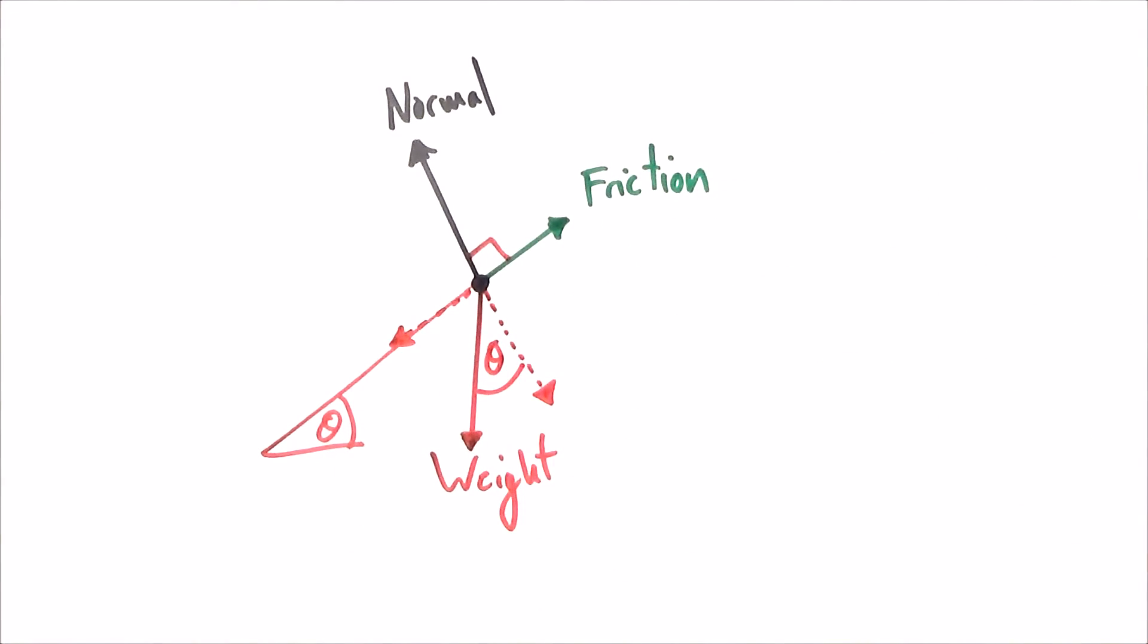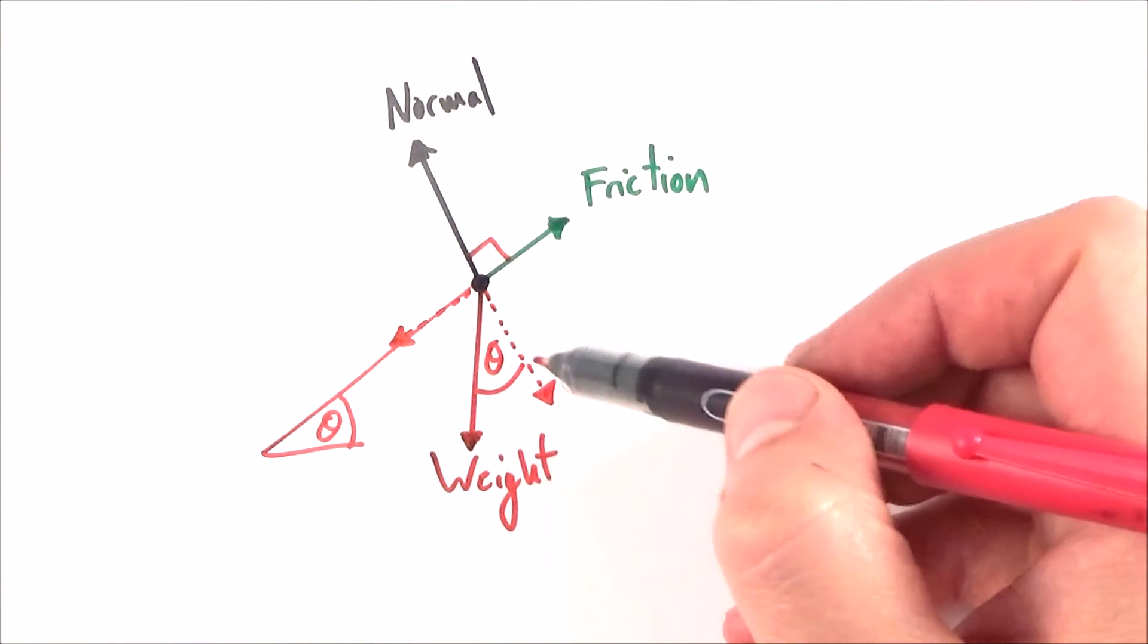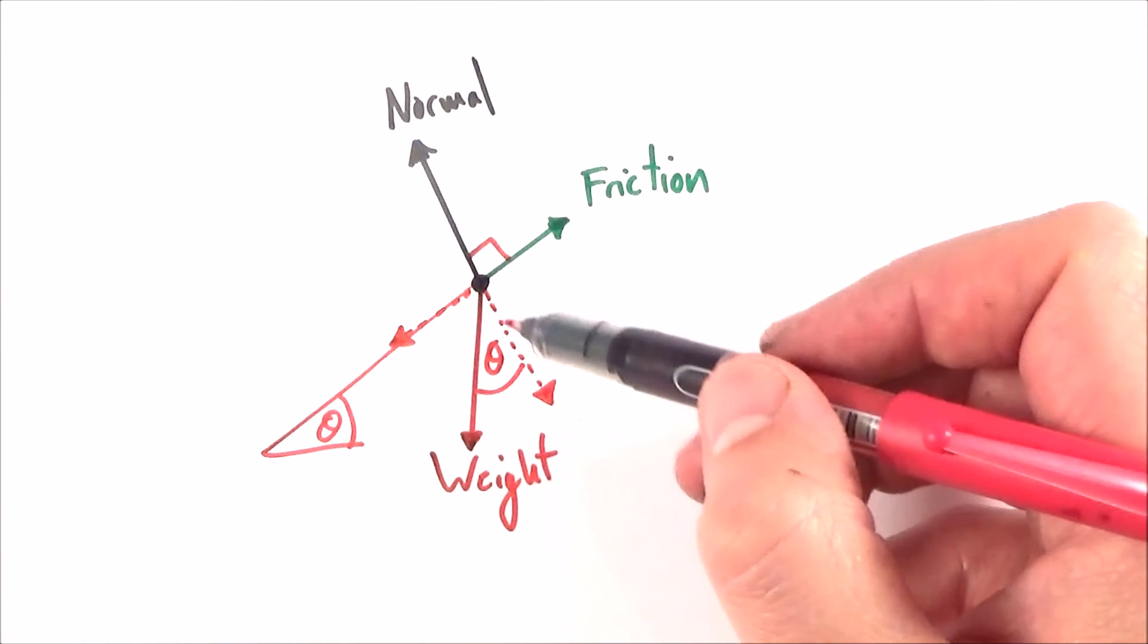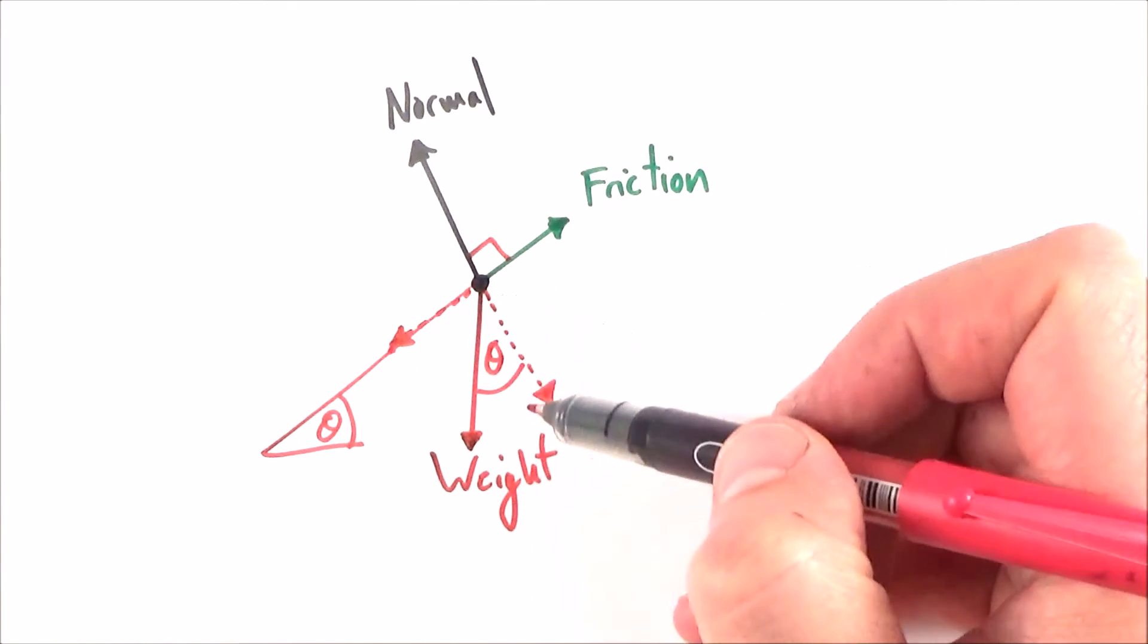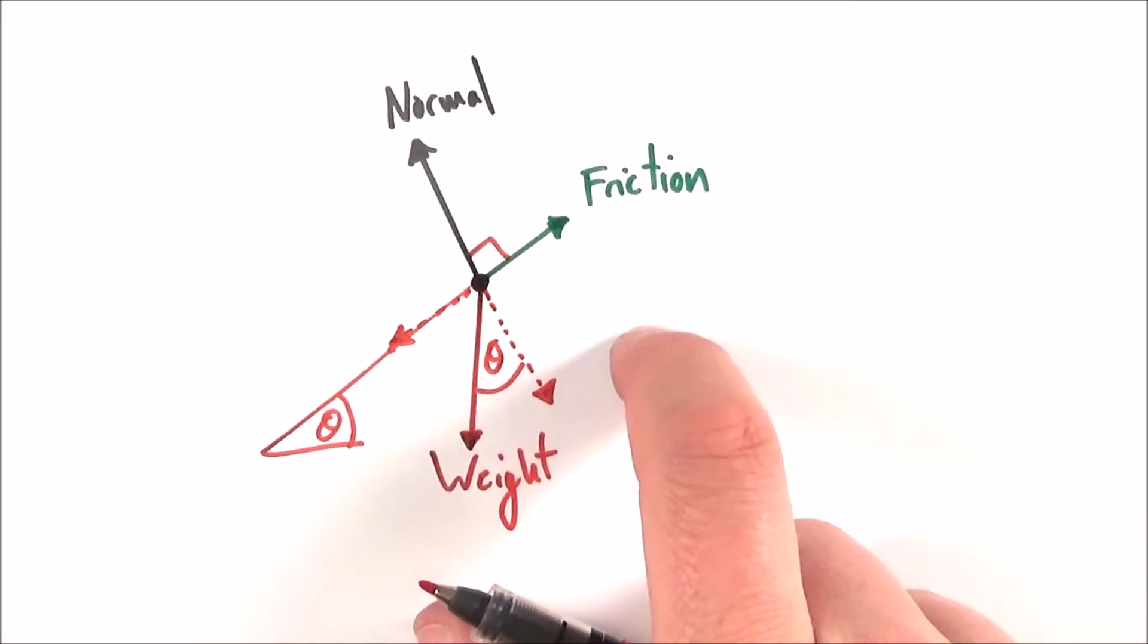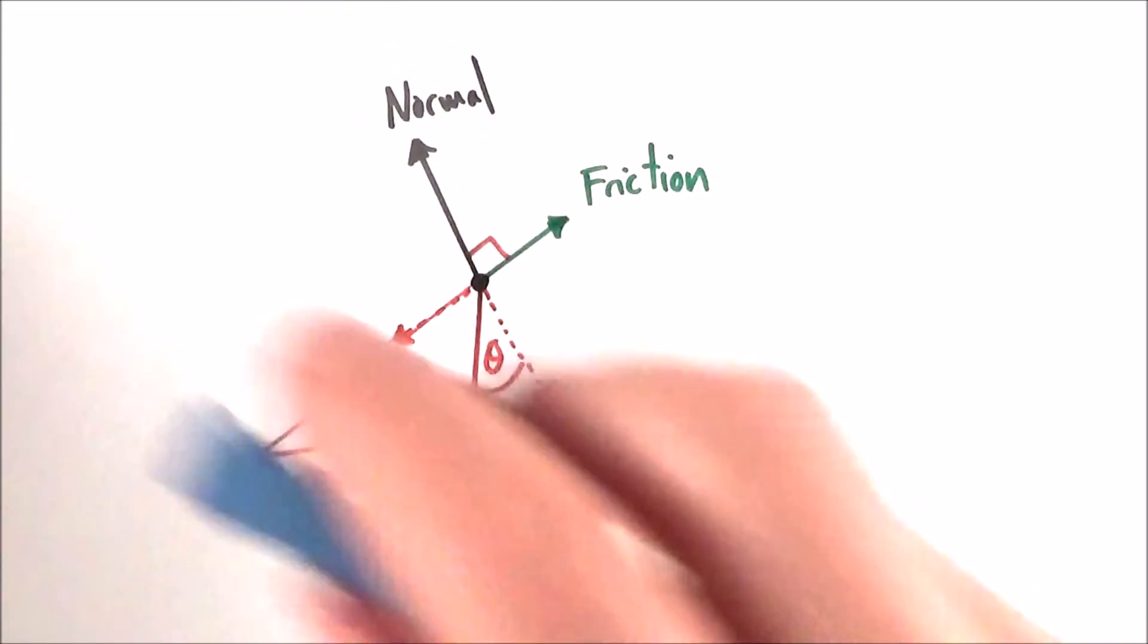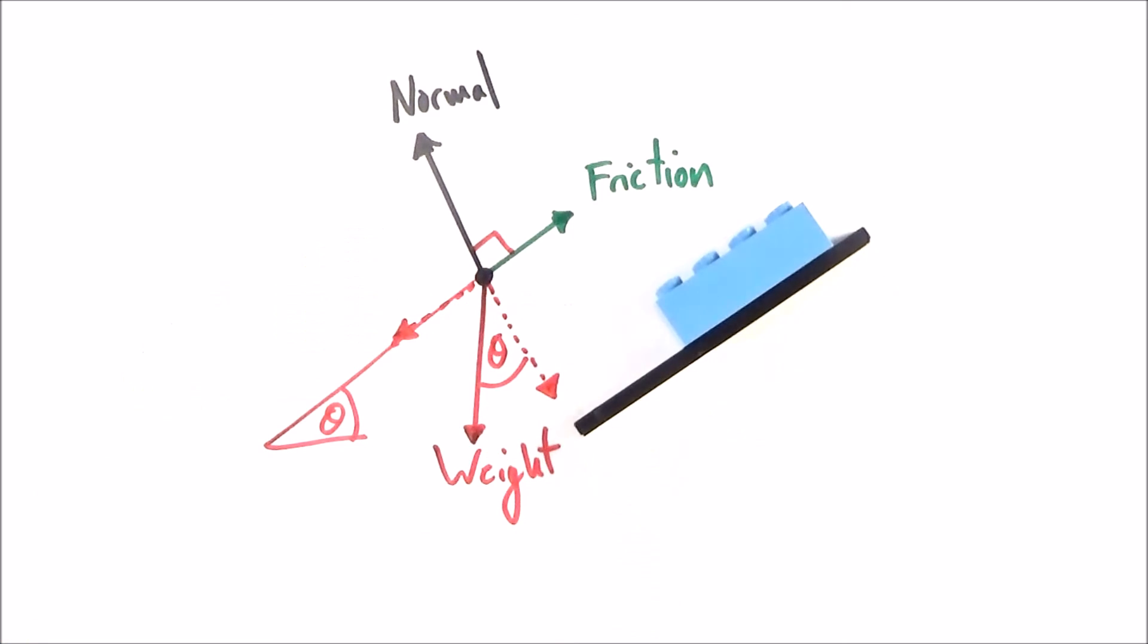If we know that angle there is theta, then this angle here too is theta. Therefore we can work out perhaps the component of weight acting opposite to normal and the component of weight acting opposite to the frictional force, provided we know some more details. But this is really important—it's a very hard example. You need to understand what happens when you have some kind of block acting on a slope at a different angle.